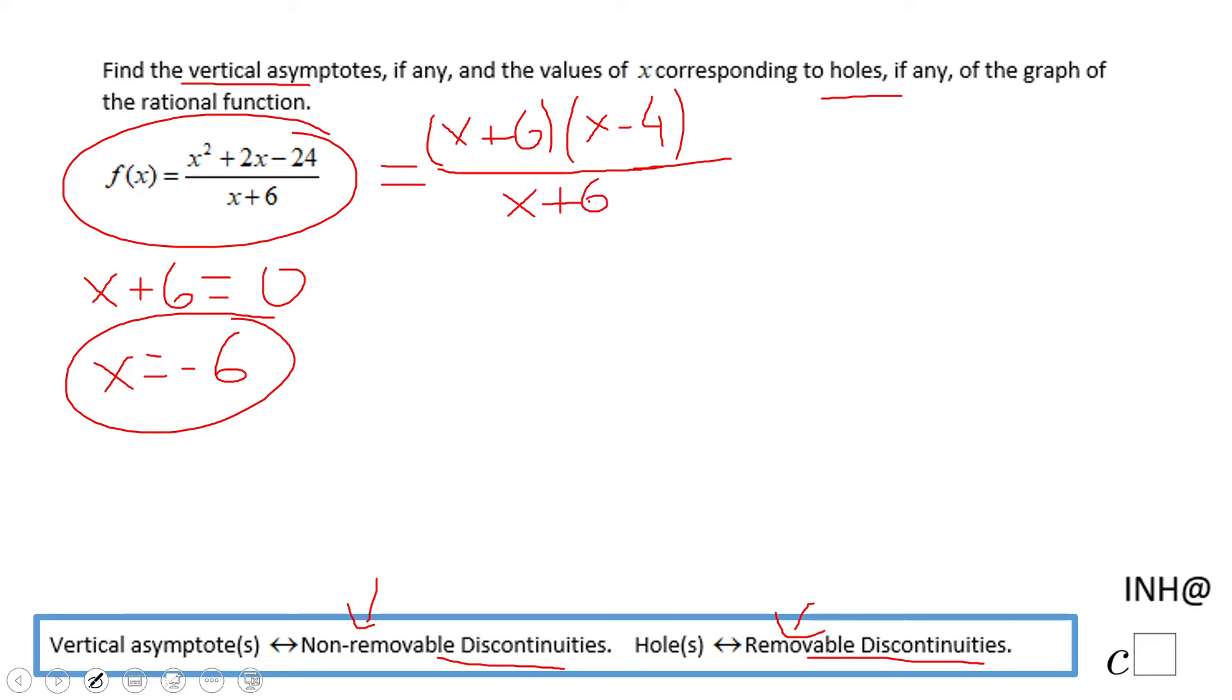And now, we notice what? This x plus six cancels out this x plus six, is removed. So this is what we call a removable discontinuity. So that x equals negative six is a hole.